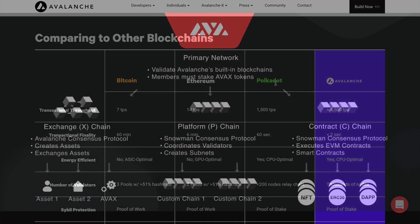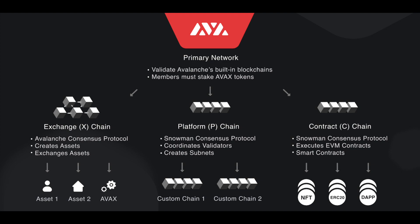Avalanche differs from other networks with its unique approach using three separate blockchains in its platform. These are X-Chain, C-Chain and P-Chain. The X-Chain is their exchange chain for creating and exchanging AVAX tokens and other digital assets. Fees are paid in their AVAX token, similar to how you would pay ETH on the Ethereum network or BNB on the Binance Smart Chain.